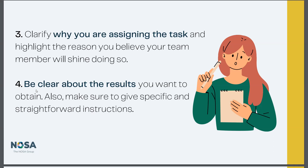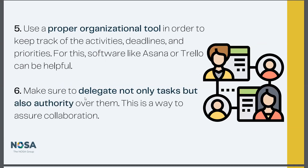Number four may take some people time to get through, especially in business operations involving schedulers, administrative staff, HR, and accounting, where results may not always be straightforward or needs may change. But being straightforward with your instructions is really important. Number five: use a proper organizational tool to keep track of activities, deadlines, and priorities. Software like Asana or Trello is very helpful. Having an office program like Microsoft Office or G Suite where everyone can communicate via email or internal messaging, and most platforms also have tracking systems to monitor work completed and time spent.